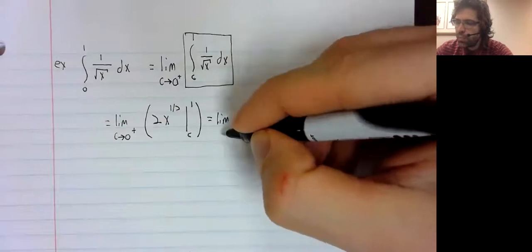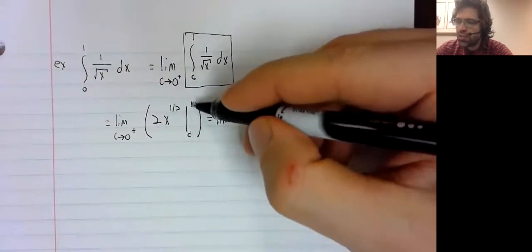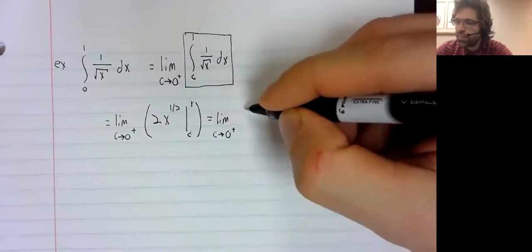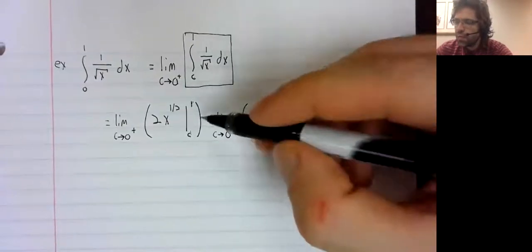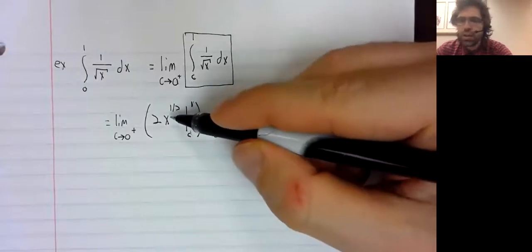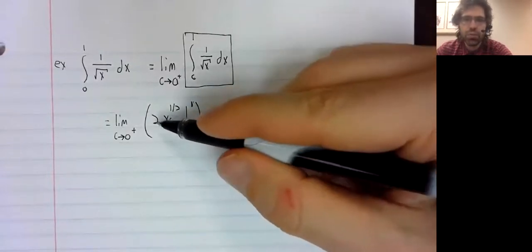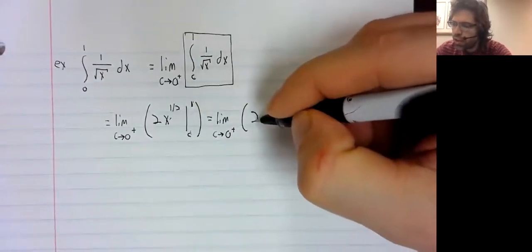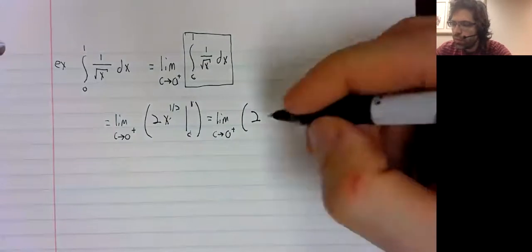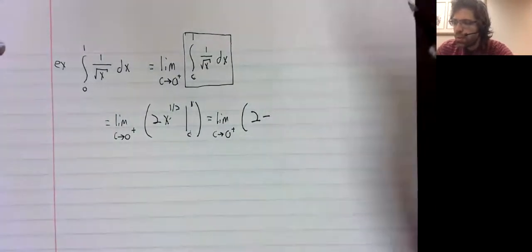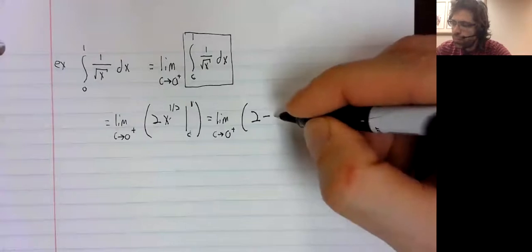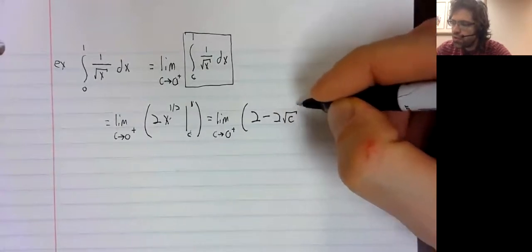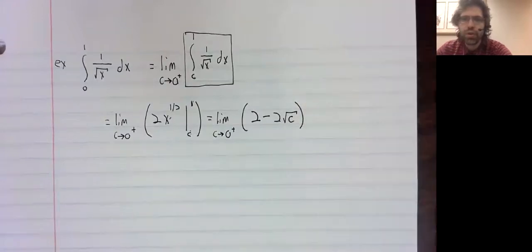And we plug our limits in and subtract. We plug one in here, we get two times one. The square root of one is one. We plug C in there, we get two times the square root of C.